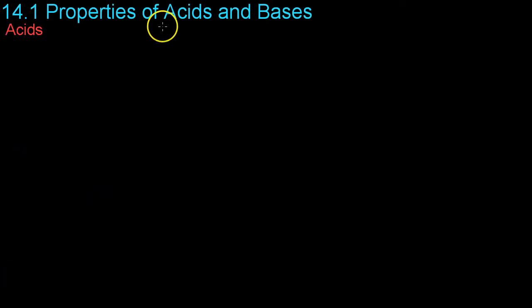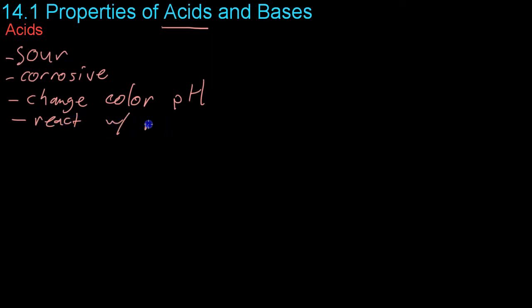So the first of these two that we're going to be discussing are the acids. Acids, just to list off some properties, tend to be sour though you shouldn't try to taste things in lab because they also tend to be very corrosive. That is, they can dissolve through metal and you and your clothing as well. They tend to change the color of pH paper which we'll discuss more later. They also react with metals and release hydrogen.